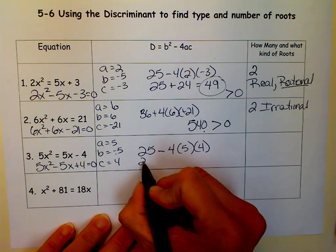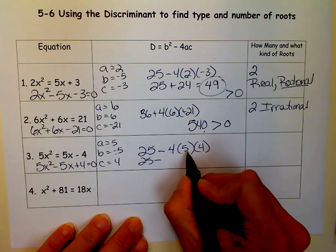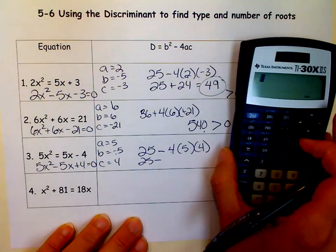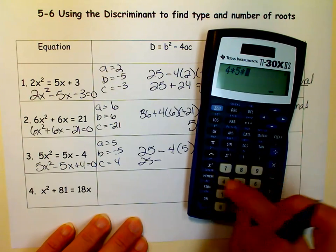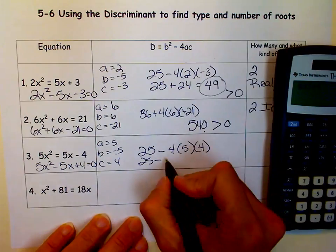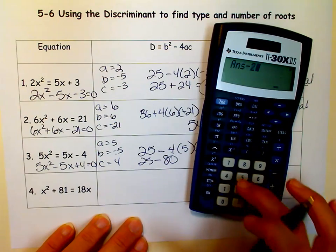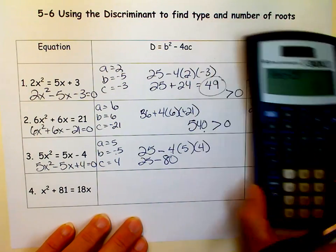And that's 25 minus 4 times 5 is 20, times 4 is 80. So what is 25 minus 80? It is negative 55.